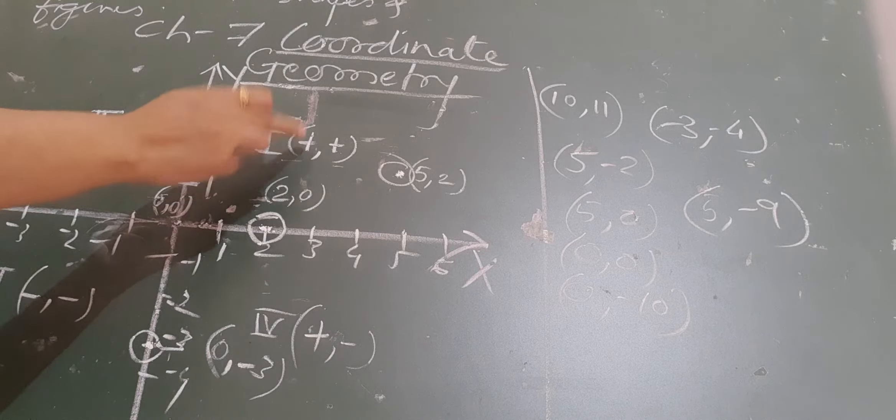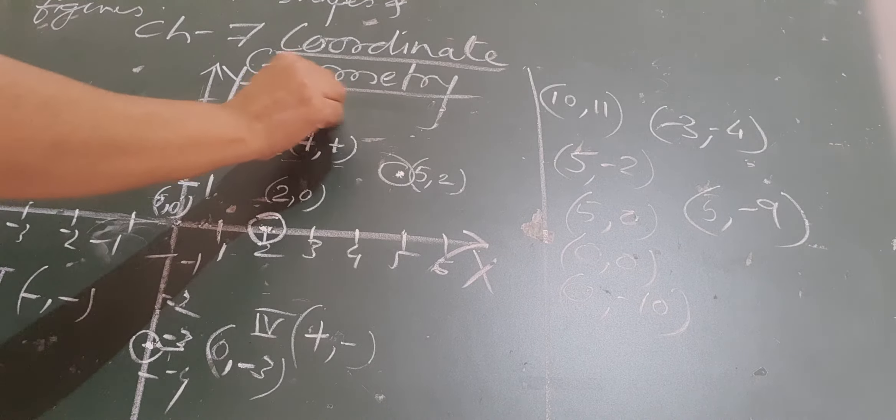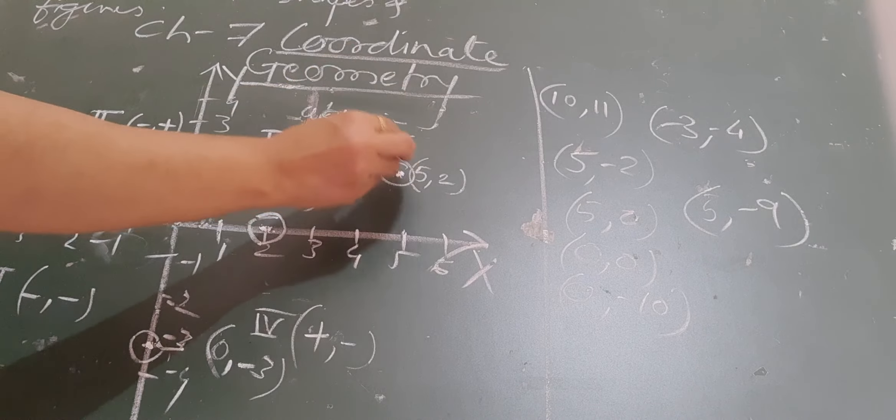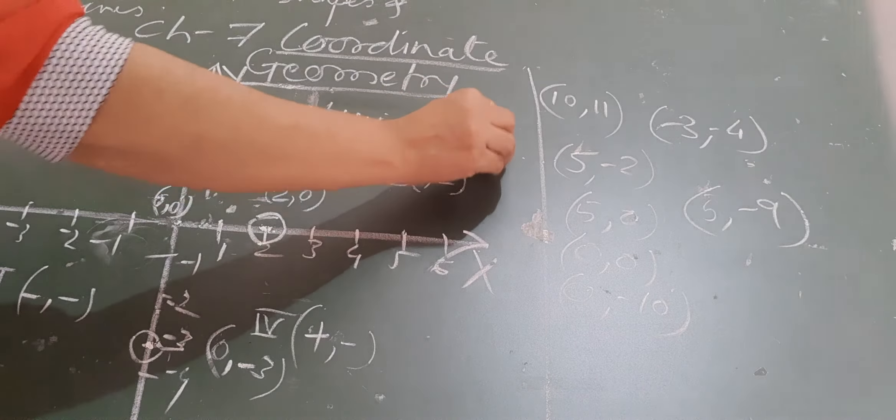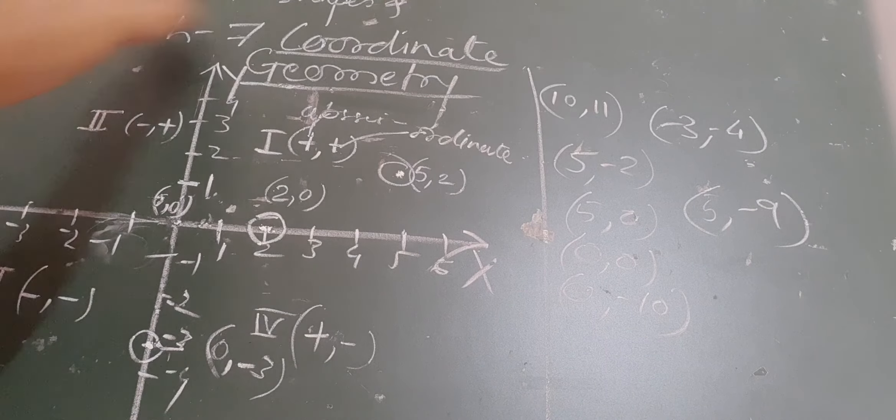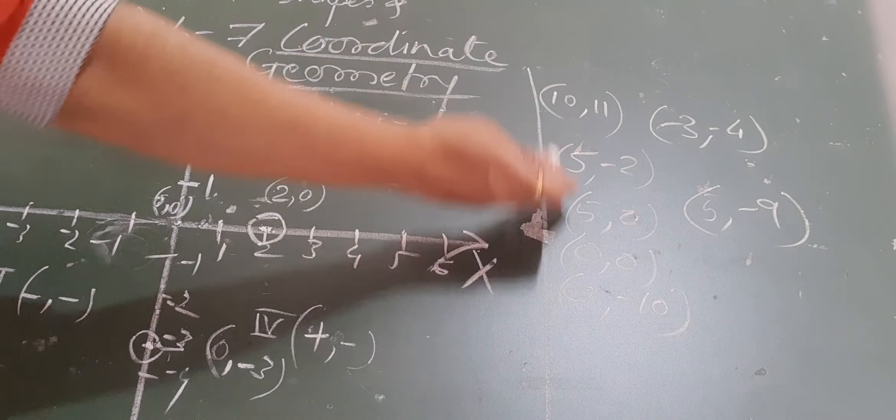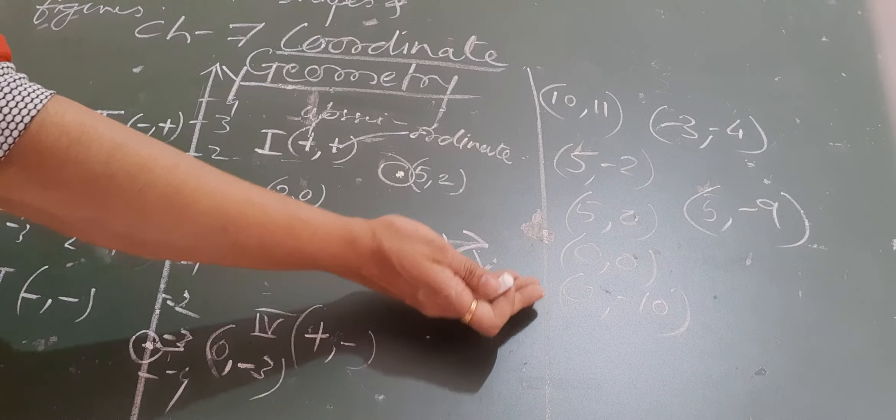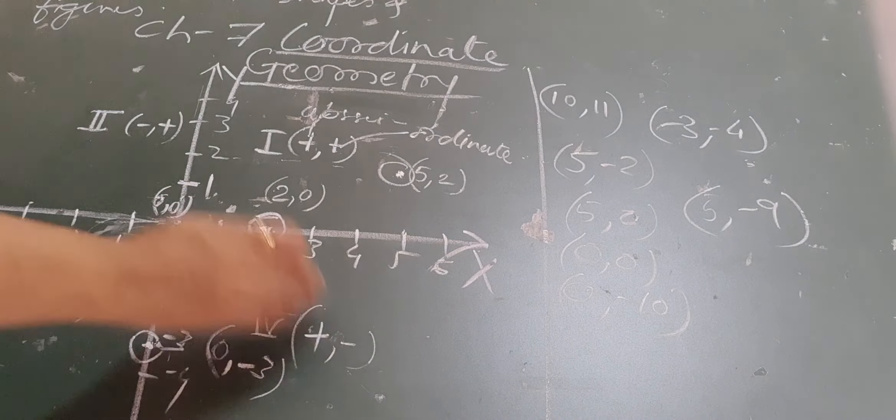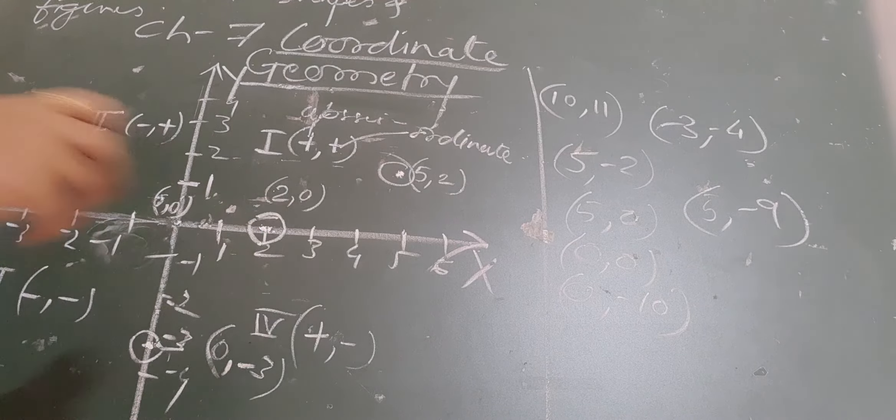The x coordinate is known as abscissa, and the y coordinate is known as ordinate. So you should know this. Depending on this, you can identify and classify which quadrant or axis these points are lying in. Thank you.